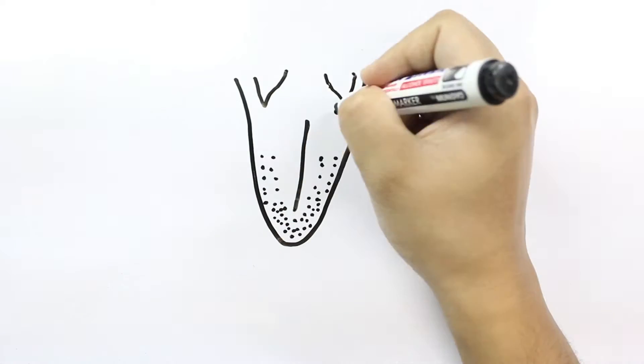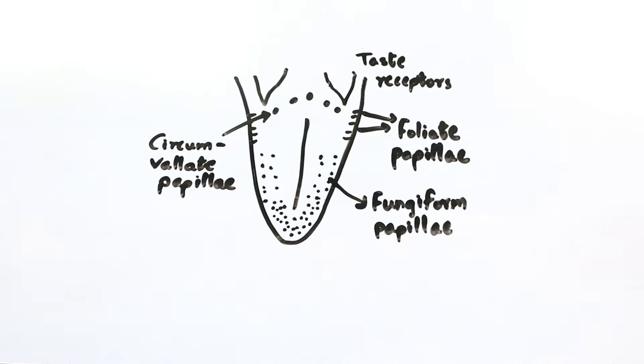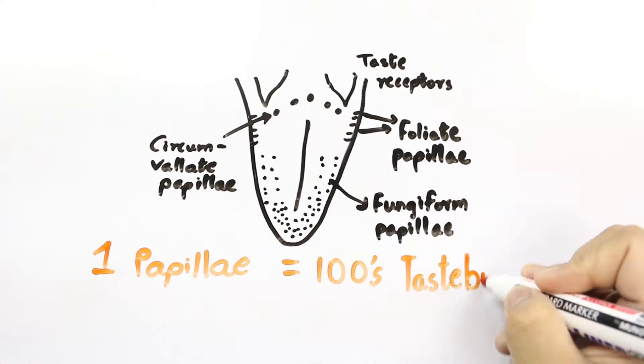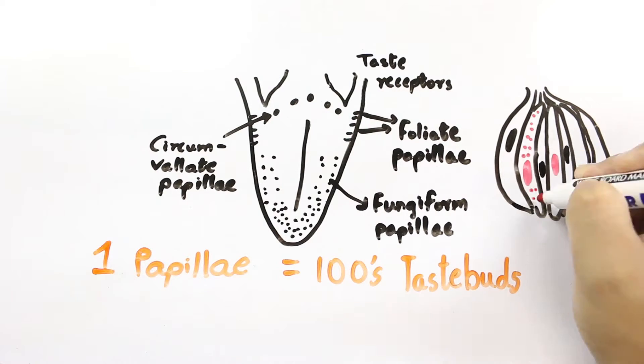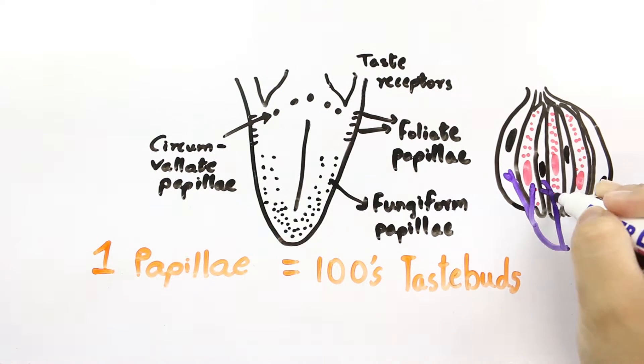The tongue is covered with thousands of small bumps called papillae which are visible to the naked eye. Within each papilla are hundreds of taste buds. There are between 2,000 and 5,000 taste buds located on the back and front of the tongue.